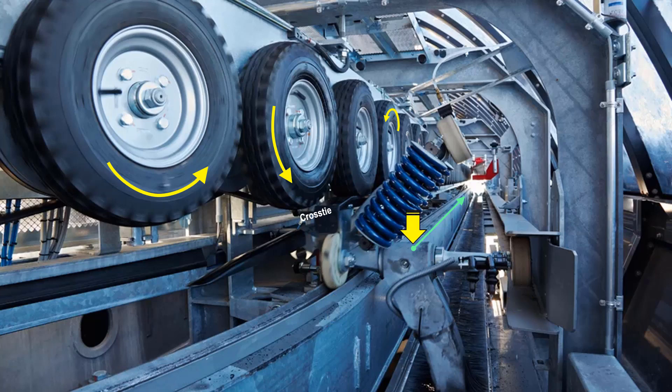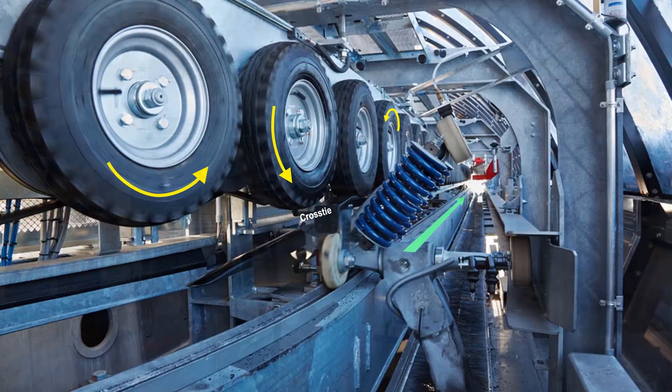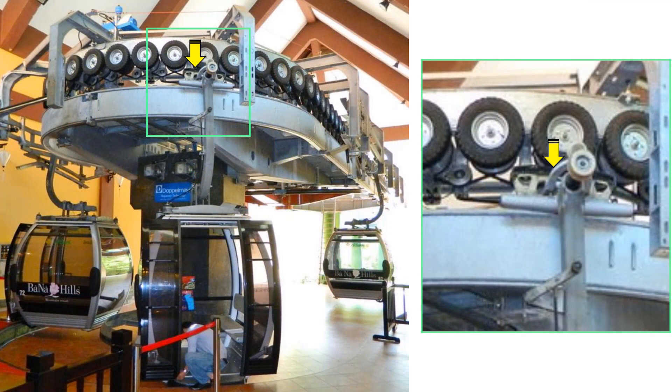This grip assembly is connected to the cabin below. The tires will press on the cross-tie rotating in a counter-clockwise direction. The rotation will move the cabin in a forward direction. This is an actual example of a cross-tie being pressed by a series of tires to propel the clamp assembly that is connected to the cabin below.